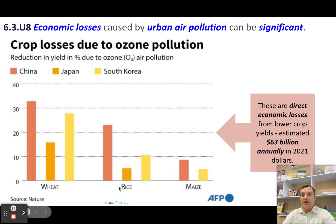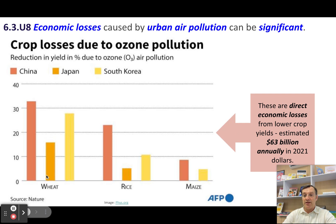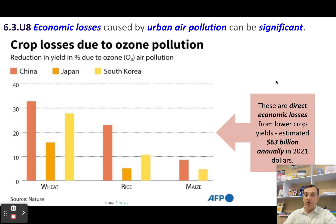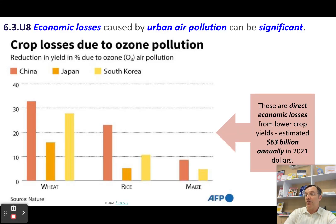Three crops — wheat, rice, and maize — in three different countries: China, Japan, and South Korea. Just in those three countries, ground-level ozone causes about sixty-three billion dollars in crop losses every year. Those are direct crop losses from those crops being impacted by the ozone in the air.